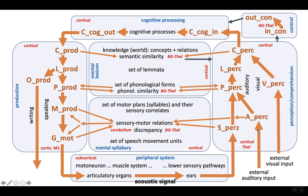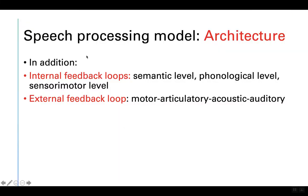The perception pathway includes somatosensory, auditory, and visual input. The auditory input can be transformed from the acoustic signal to the phonological level, then to the lemma level, and then to the concept level. The production pathway goes from the concept level down through the lexical lemma level, to the phonological level, then to a motor level and towards a gesture level. There are control mechanisms on the semantic level, phonological level, and for articulation — these are internal feedback loops.